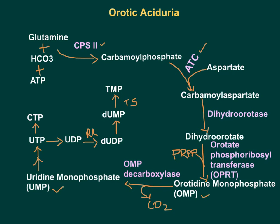This is how pyrimidines are synthesized. Note that whenever there is accumulation of UTP, UTP will have a negative effect on CPS2 enzyme — that is how pyrimidine nucleotides are regulated. Now in orotic aciduria, there will be deficiency or defect in UMP synthase — which is a combination of orotate phosphoribosyltransferase and OMP decarboxylase. If these two enzymes are deficient, that will cause a decrease in UTP concentration, meaning UTP does not have a negative effect on CPS2.